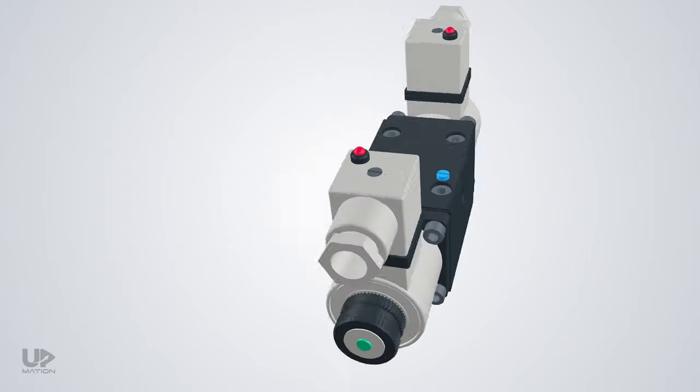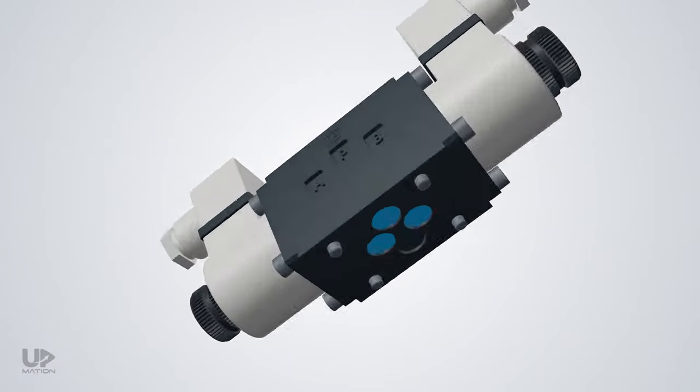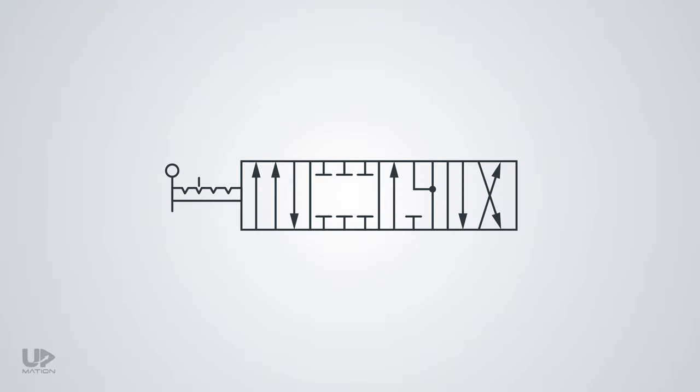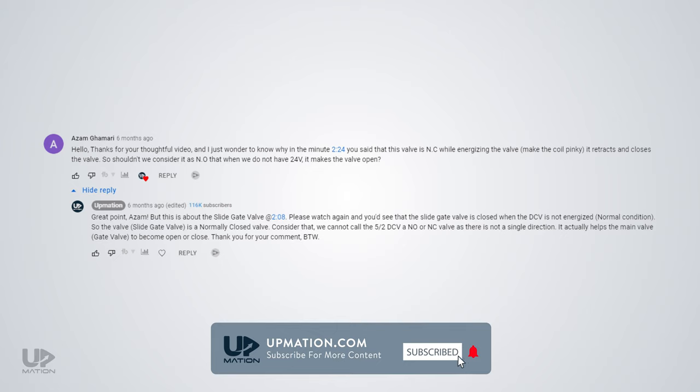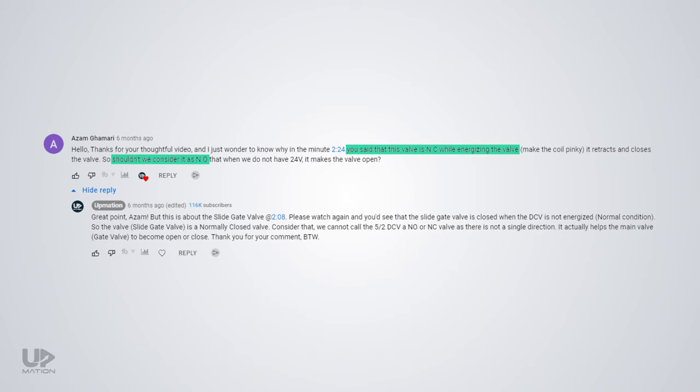Do you know what is a 4 by 3 spool valve and how does it work? Or are you able to read this schematic symbol? Can we use normally open or normally closed expressions for a directional control valve?